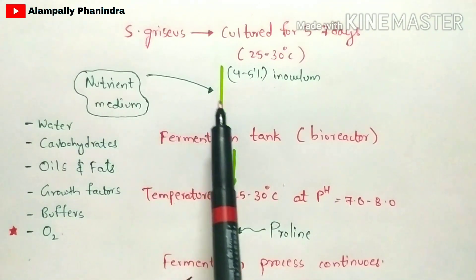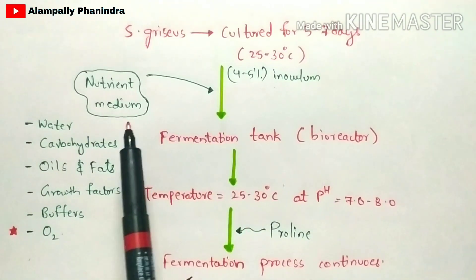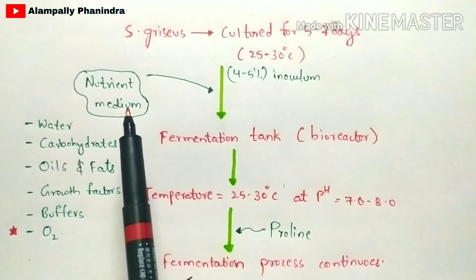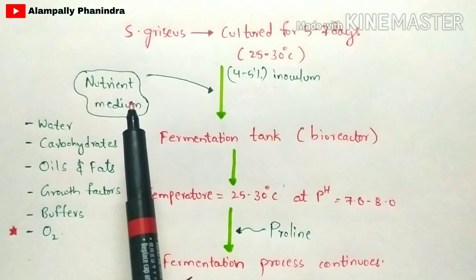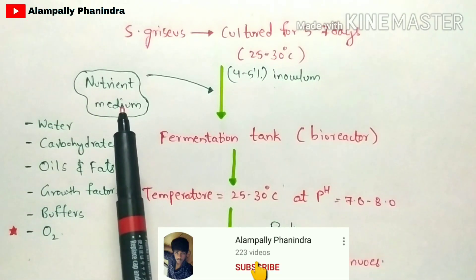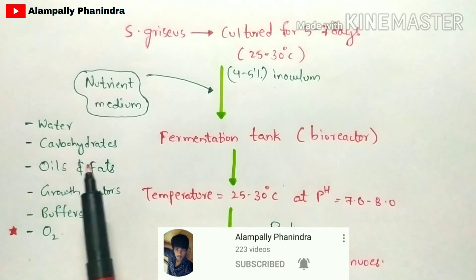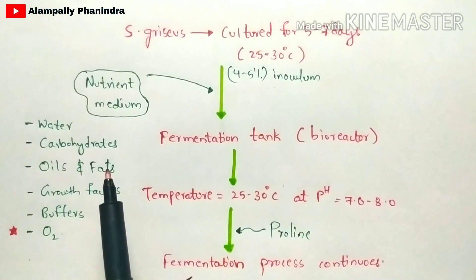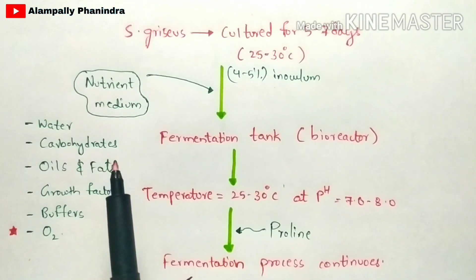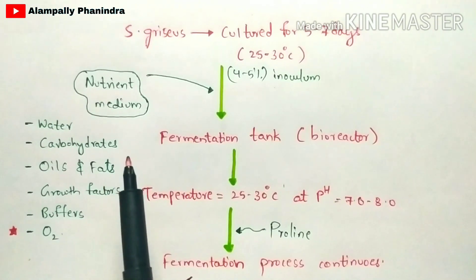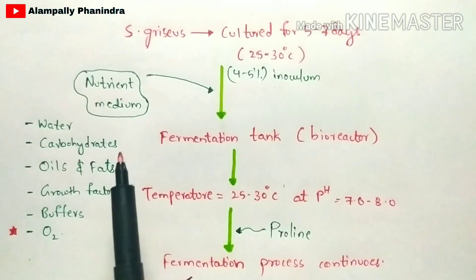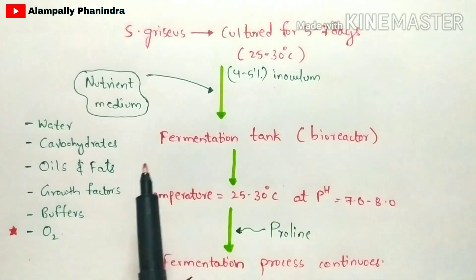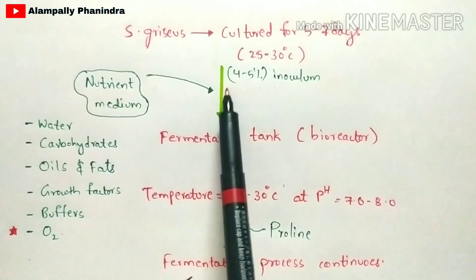The nutrient medium — also explained in the previous fermentation video — is mainly used for the conversion of primary metabolites to secondary metabolites. The nutrient medium consists of water, carbohydrates, oils and fats, growth factors, buffers, and oxygen. Oxygen plays a major and vital role not only in streptomycin production but in all fermentation processes such as production of organic acids, alcohols, wines, cheese, and yogurt.